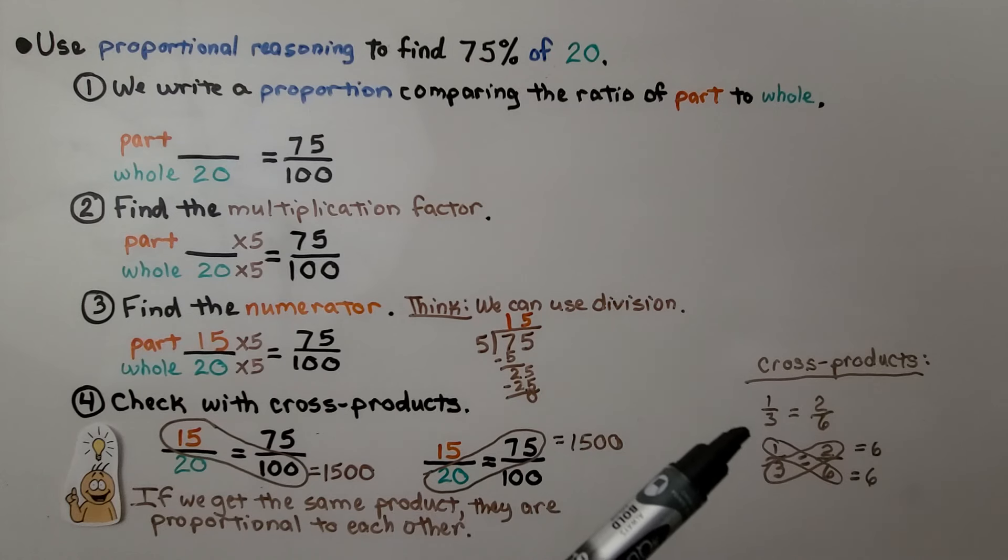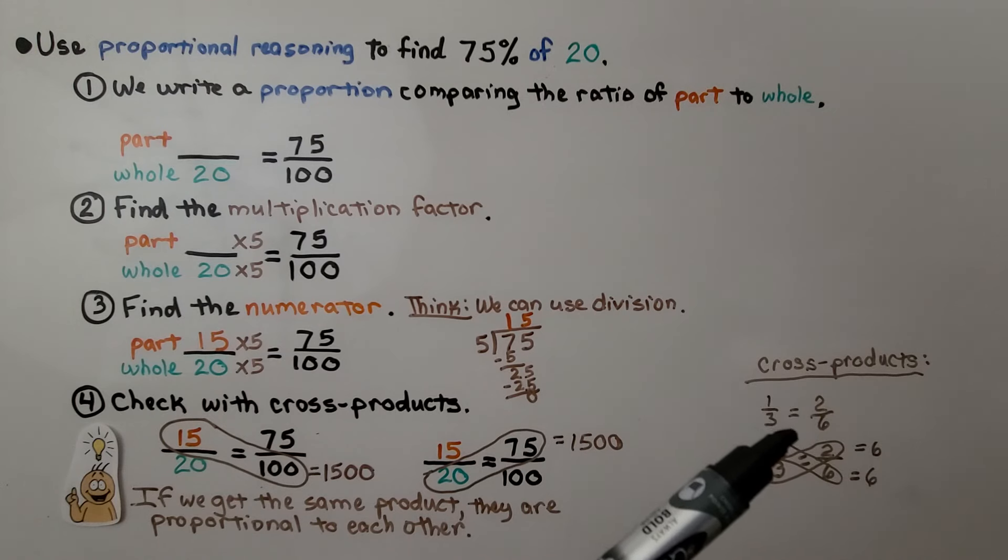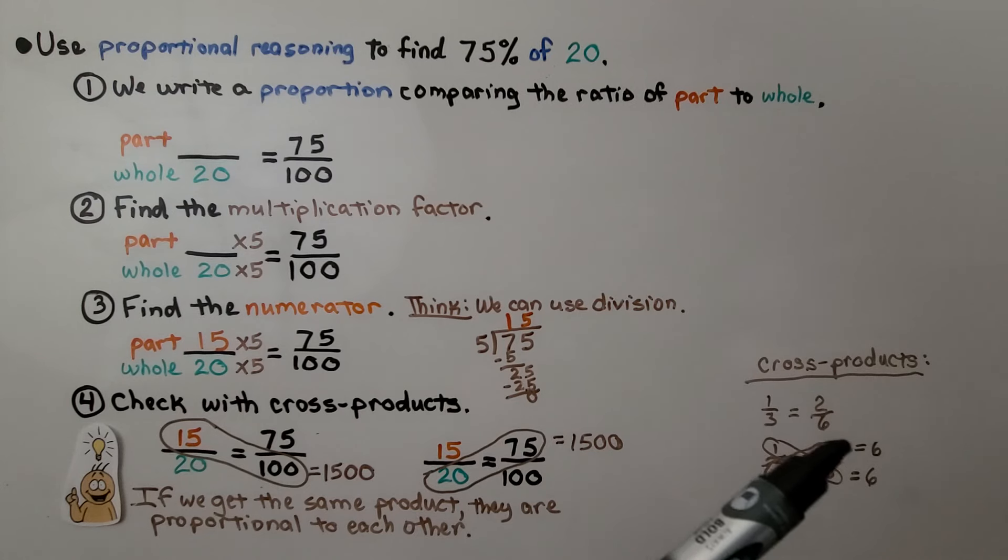So the way cross products work is if we have one third equals two sixths, and we want to make sure that's right, we multiply one times six, which is six, and three times two, which is six. And if we get the same number, they both have a six here, that means they are in proportion to each other.